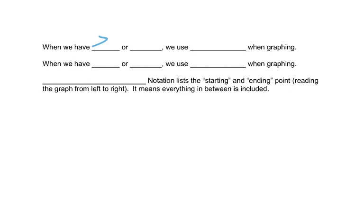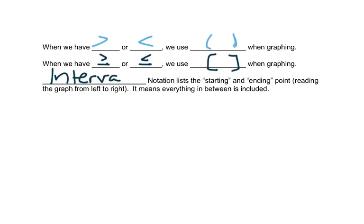If we have greater than or less than, we use a parenthesis when graphing. If we have greater than or equal to or less than or equal to, we use a bracket when graphing. Interval notation lists a starting and an ending point, and we read the graph from left to right. It means that everything in between is included.